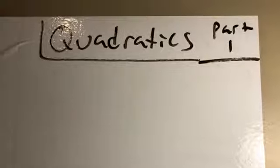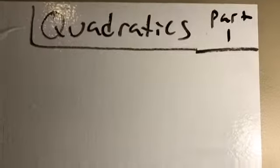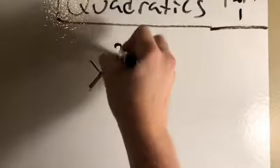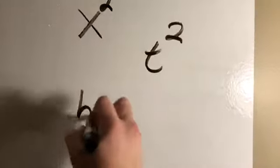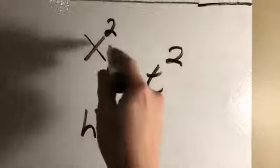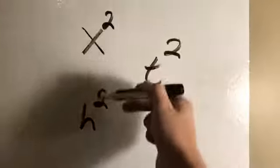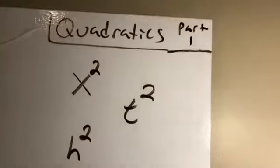Quadratics: first of all and most importantly, you know you're dealing with a quadratic whenever you see a variable squared. So if you see x squared, t squared, h squared—anytime you see a variable squared and the two is the biggest exponent out there, we have a quadratic.